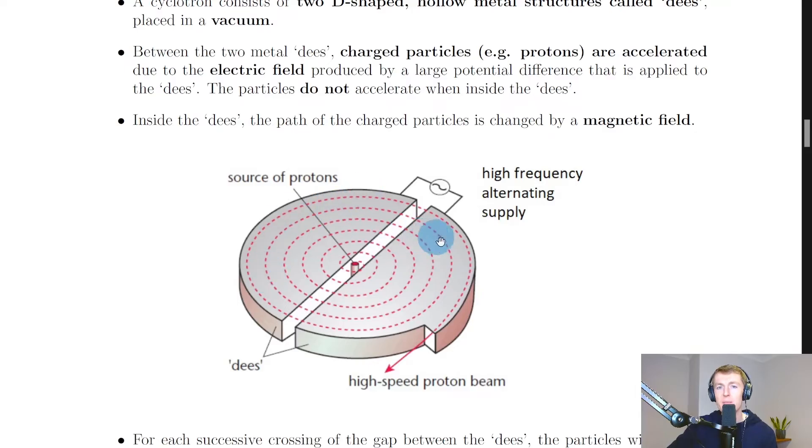Inside the dees, the path of the charged particles is changed by a magnetic field. That's where the particles are getting their circular pattern from—they're being deflected within the dees due to the magnetic field.